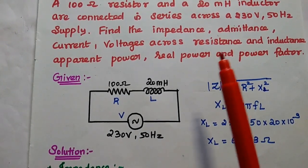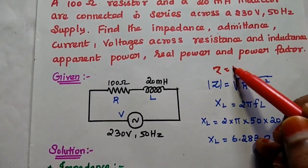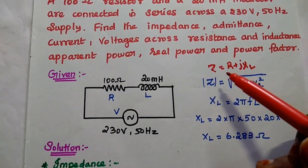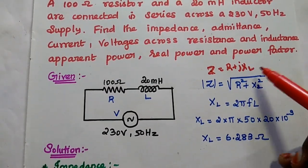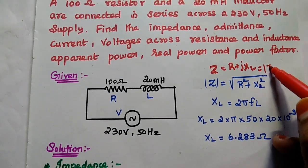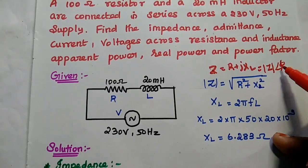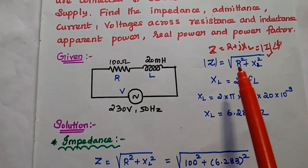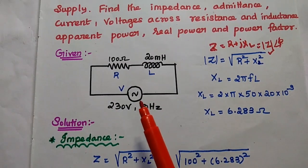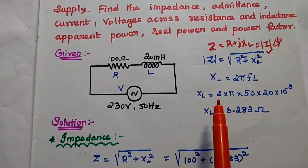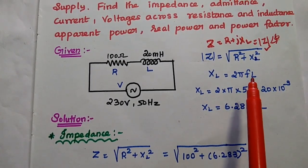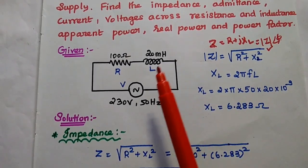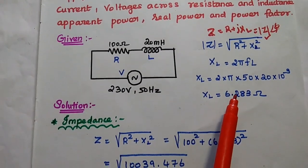The first one is impedance. Impedance is equal to R plus jXL. So first we are going to find out the impedance value: Z is equal to R plus jXL. In complex form that can be written as the modulus of Z with the phase. We are going to find out only the magnitude value, that is equal to square root of R squared plus XL squared. R is given as 100 ohm. We are going to find out the XL value. The inductive reactance XL is equal to 2πFL. The value of F is 50 hertz, and the inductance value is 20 mH.